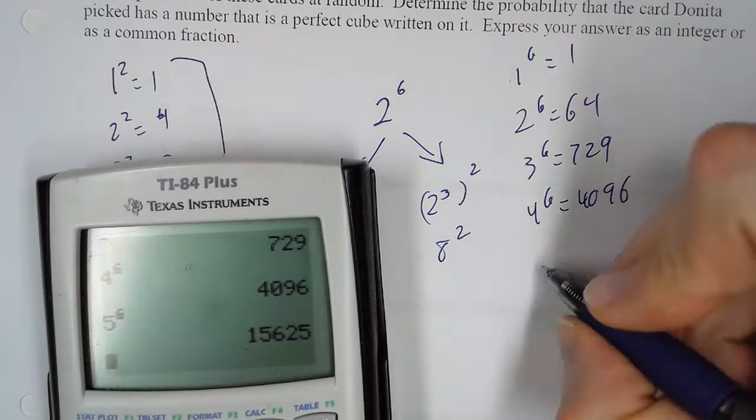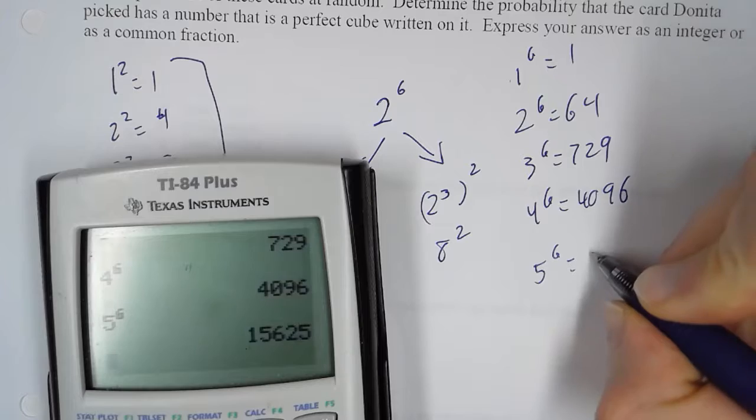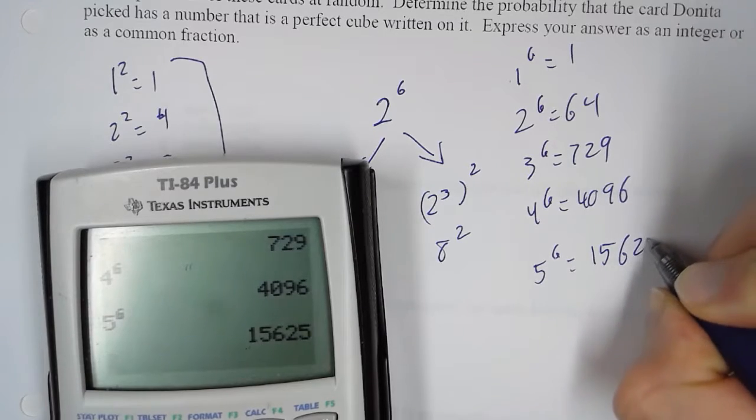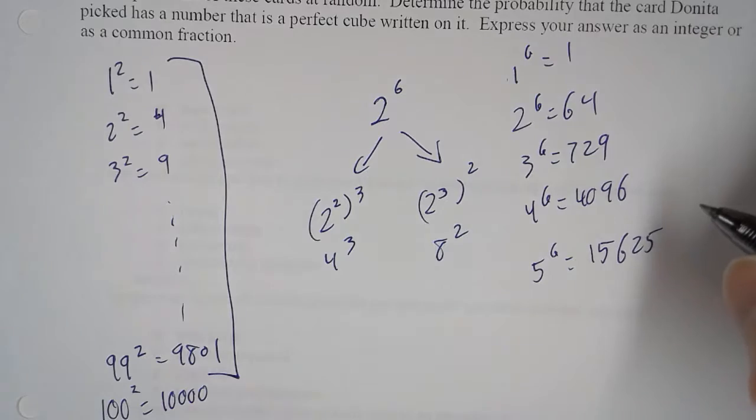5 to the sixth is 15,625. That is too big. That is over 10,000.